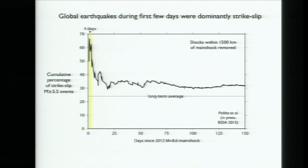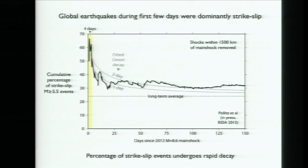Love waves are produced by strike-slip earthquakes, and the love wave motion shakes vertical strike-slip faults but does nothing for thrust faults. Fred looked at whether the triggered earthquakes around the world were preferentially strike-slip. In the first few days, two-thirds of the earthquakes around the world were strike-slip, whereas typically only a quarter of them are. And it had that rapid decay just the way we saw before. Now things are getting interesting.